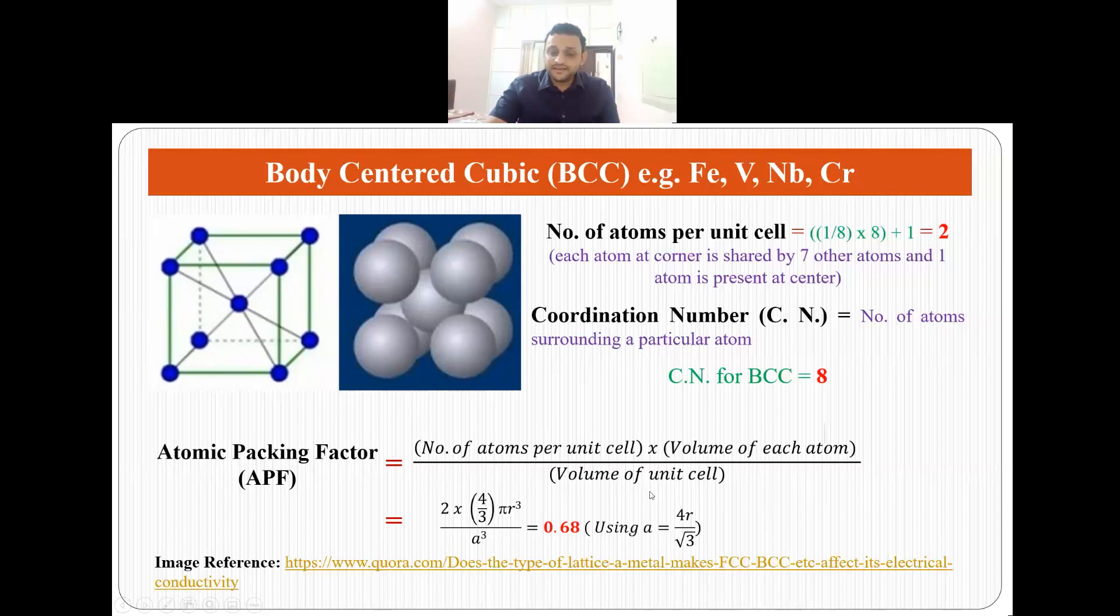In the case of BCC, a equals 4r by root 3 and if we put 4r by root 3 in this equation, we get atomic packing factor of 0.68. It means 68% of the volume is occupied by atoms in the BCC system. Some of the materials which exhibit BCC structure are iron, vanadium, niobium and chromium.